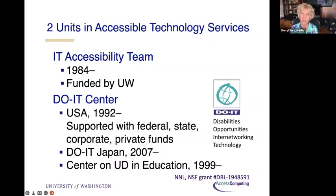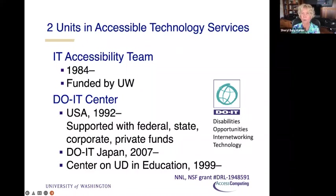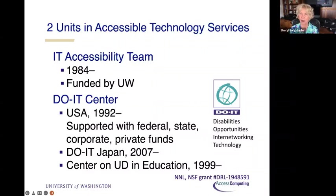What disability resources for students does is provide accommodations for students with disabilities. Once a student identifies with them as having a disability and provides documentation, they make sure that they get the accommodations they need. The best way to describe our relationship: they're reactive, serving the student. We're more the proactive side — how can we make our campus and our courses more accessible from the get-go, so we don't have to have so many accommodations.